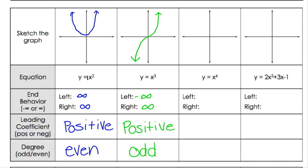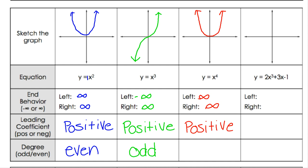Next up we have x⁴. An x⁴ graph looks very similar to an x² graph — that parabola shape again. The left side is pointing upwards towards infinity and the right side is also pointing upwards towards infinity. The leading coefficient is again positive, and the degree on this one is 4, so it is even as well.